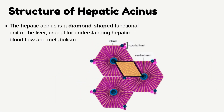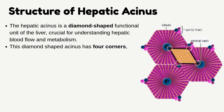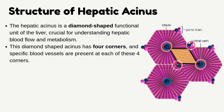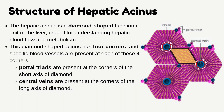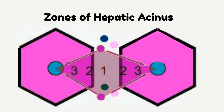The hepatic acinus is a diamond-shaped functional unit of the liver, crucial for understanding hepatic blood flow and metabolism. This diamond-shaped acinus has four corners, and specific blood vessels are present at each of these four corners. Portal triads are present at the corners of the short axis of the diamond, and central veins are present at the corners of the long axis of the diamond.